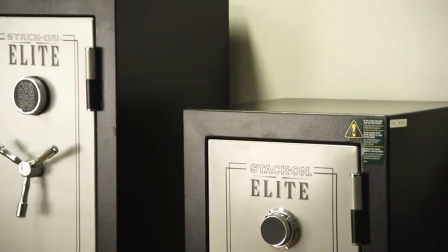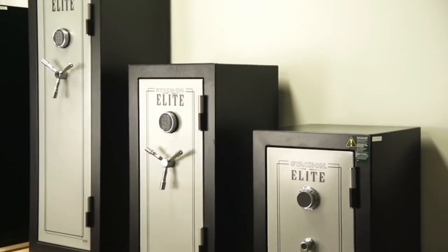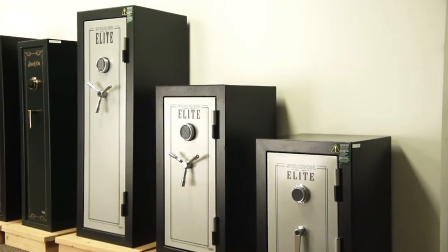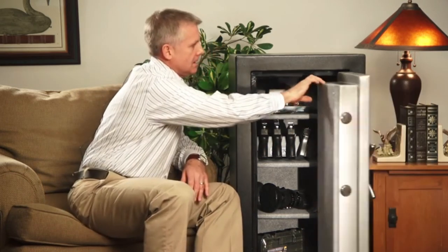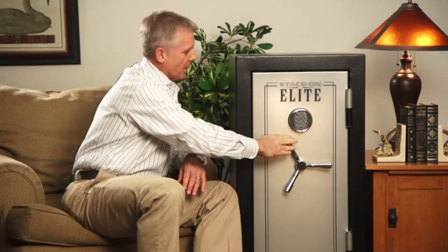Elite Executive Safes are available in three sizes, from the 29-inch tall personal safe to a 40-inch junior executive model and the full-size 59-inch tall safe. No matter what the size, the same quality standards are built into these safes. Thanks for taking the time to learn a little bit more about Stack-On's line of Elite Executive Safes. These safes provide great security and features at an affordable price.